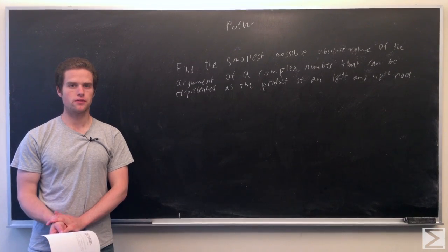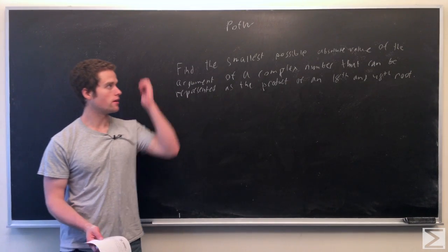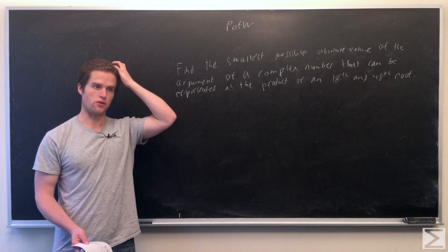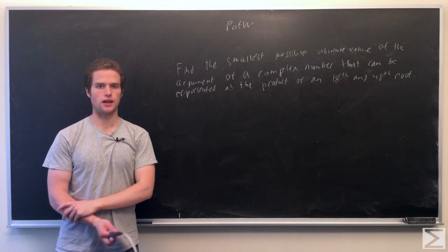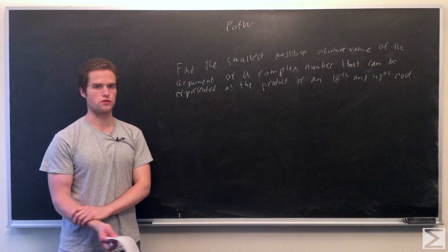Welcome to Center of Math Problem of the Week. For this week's problem, we want to find the minimum possible absolute value of an argument of a complex number that can be represented as a product of an 18th and a 48th root.